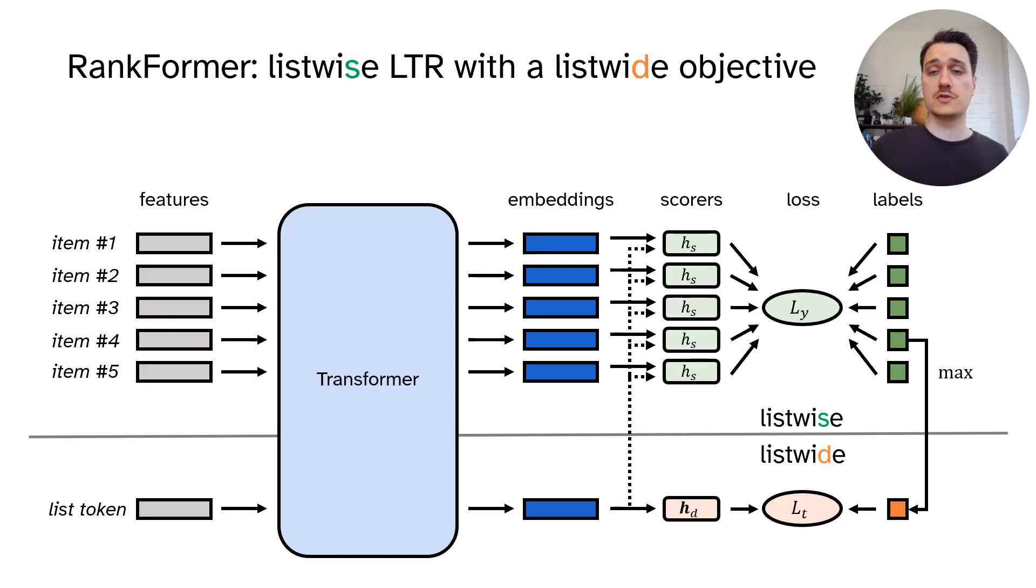This approach brings us to the RankFormer architecture, which starts from a transformer that performs listwise learning to rank, but now also estimates the overall quality of the list context as a separate embedding. This list-wide context is both used to better predict individual item scores and in a list-wide objective.